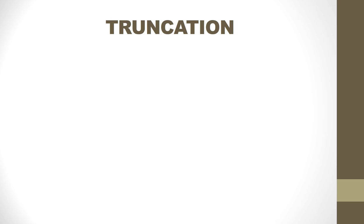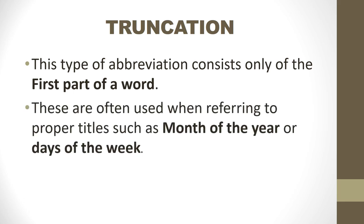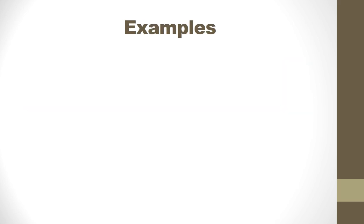Now, all those seven types. The first one is truncation. This type of abbreviation consists only of the first part of a word. These are often used when referring to proper titles such as months of the year or days of the week. The thing to be noted is that in truncation, just months of the year or days of the week are mentioned.